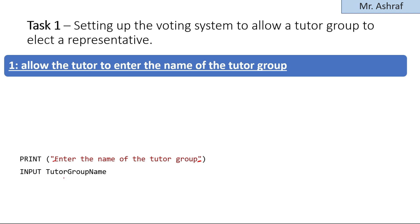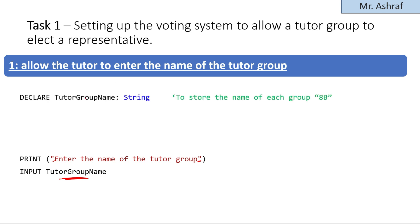Make sure that when using a variable, you declare it before using it. To declare a variable, write the keyword DECLARE, then the variable name, then a colon — or you can use AS — followed by the data type. Here the data type is STRING, because this variable will store the tutor group name, which is a group of characters.